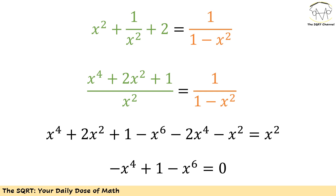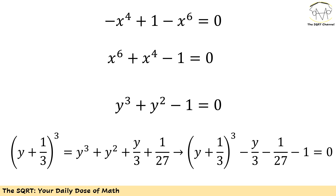From here it's going to be tricky. Let's start by multiplying negative one to both sides of this equation to get x⁶ plus x⁴ minus 1 equals 0. Now I have x⁴ and x⁶, so I'm going to replace x² with y. Then I will have y³ plus y² minus 1 equals 0. The goal is to reduce the degree of this polynomial, but we still have a degree-3 polynomial that is not easy to solve.